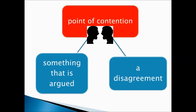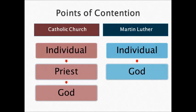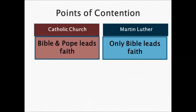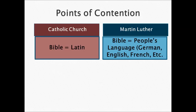Martin Luther has some other points of contention besides indulgences. A point of contention is something you argue or disagree with. One point is that in the Catholic Church, if an individual wants to be forgiven for their sins, they go meet with a priest. Martin Luther said you don't need someone in between you and God — you can go directly to God and be forgiven. Another point of contention was that in the Catholic Church, the Bible and the Pope lead the faith. Martin Luther would argue that only the Bible can lead the faith.